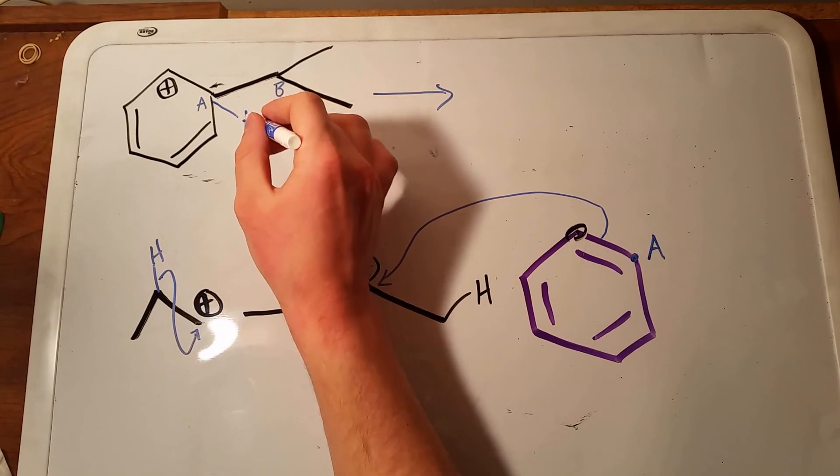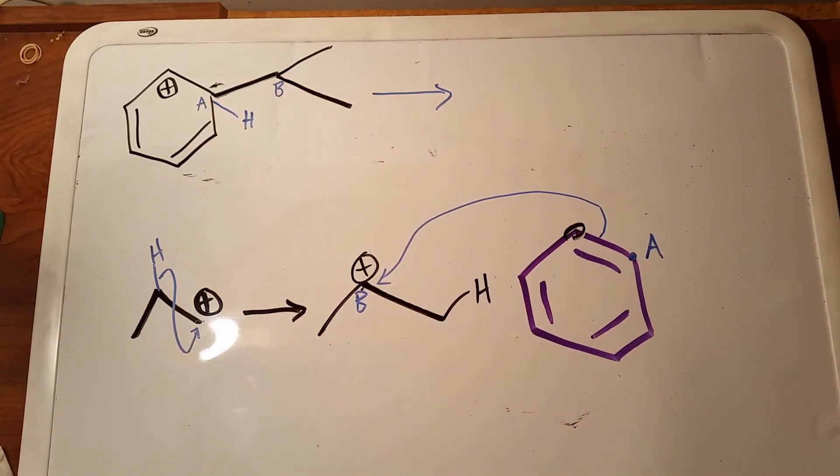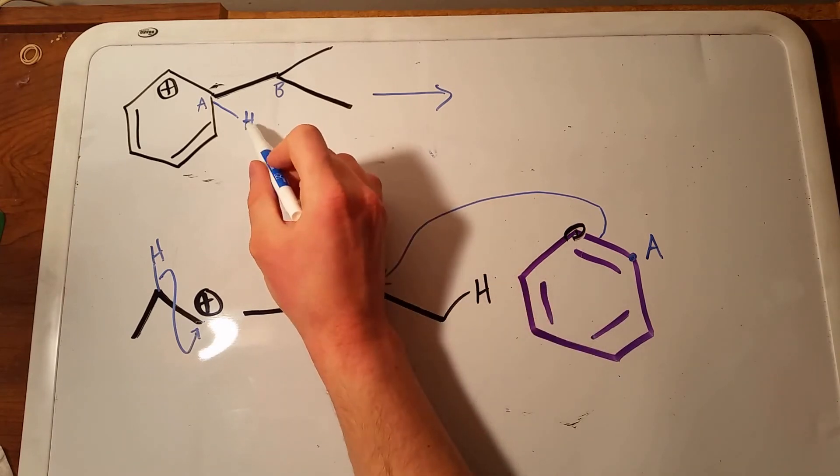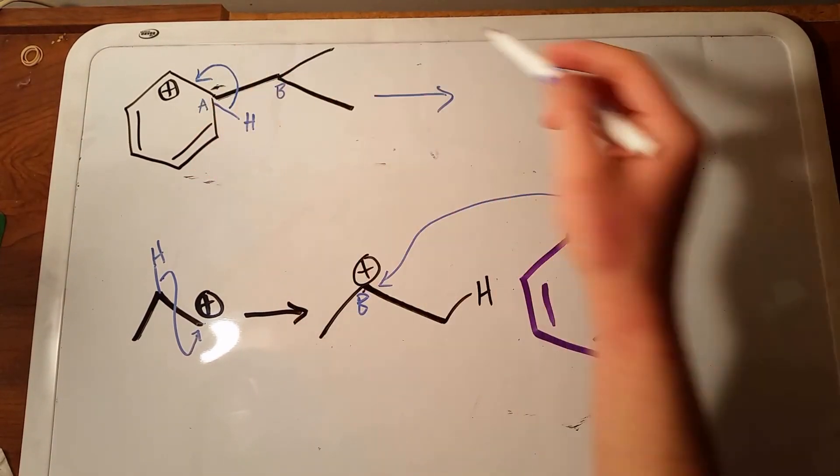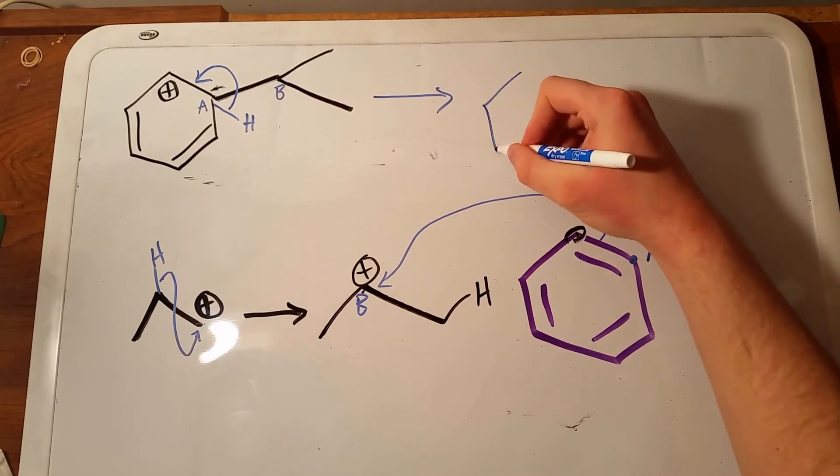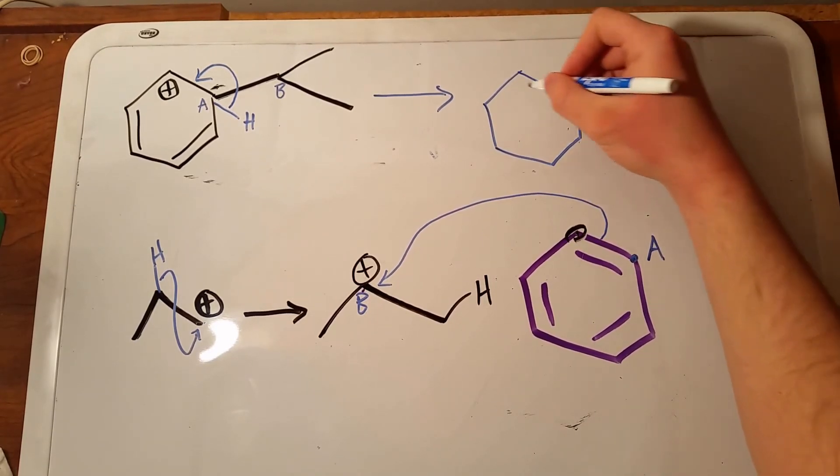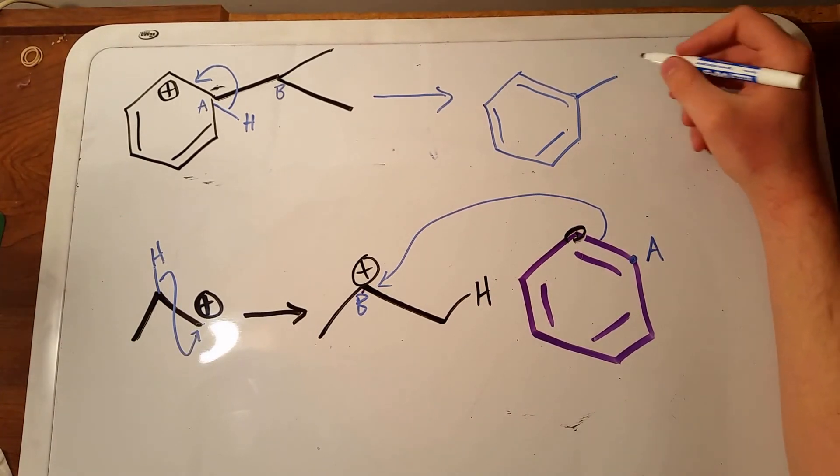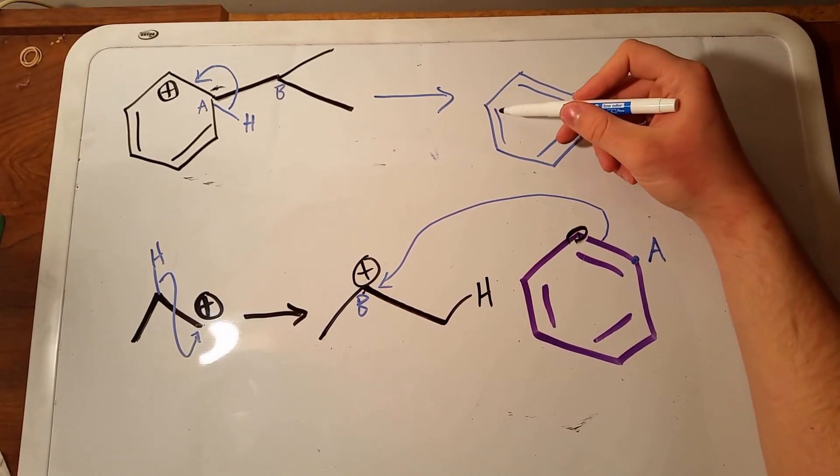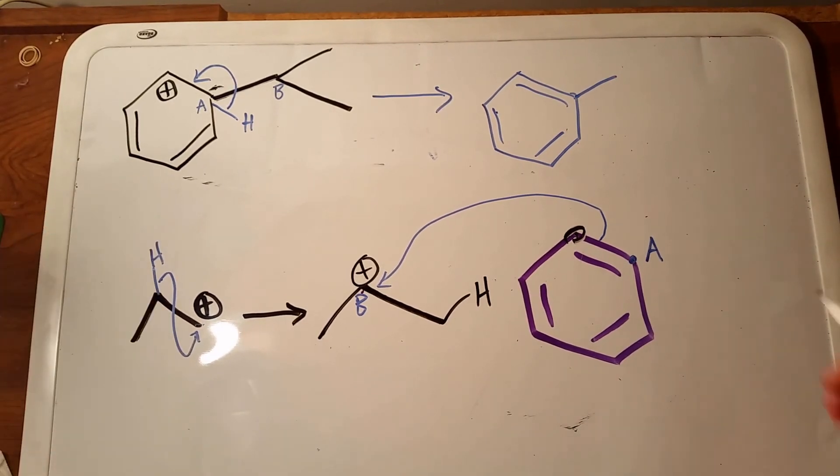The electrons, some base, which we can arbitrarily say is just floating around, is going to pull off this hydrogen. And then the electrons from the carbon-hydrogen bond go to where the double bond wants to form to make that structure aromatic again. And this is why every electrophilic aromatic substitution reaction ends with a benzene and not a ring with a positive in it.